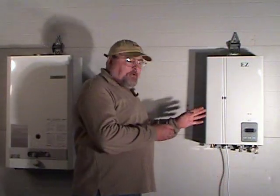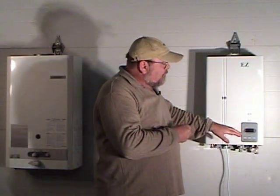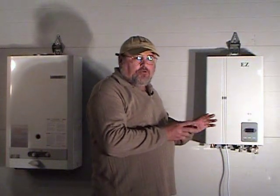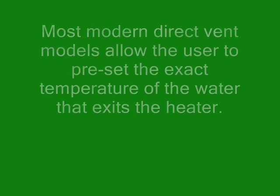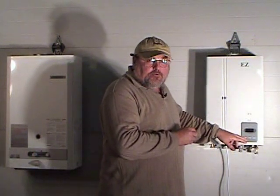When you plug this unit into the wall, an electrical supply is going to power a fan, which forces air into the combustion chamber for a much more efficient and hotter process of heating the water. You'll also see most modern direct vent models will have a control panel, either mounted on the heater or as a remote control unit that you can mount in your kitchen or somewhere in the house. This particular model from EasyTankless.com has three buttons on the control panel: an on/off switch and up and down buttons for controlling the temperature of the water.